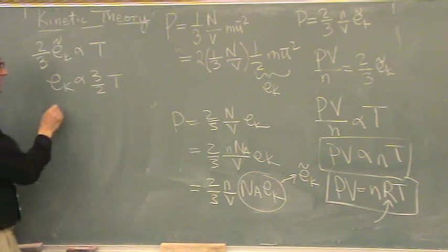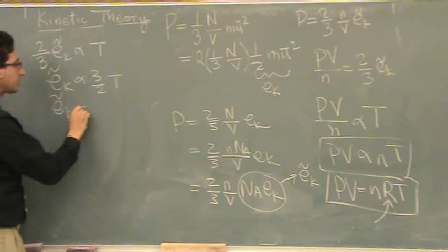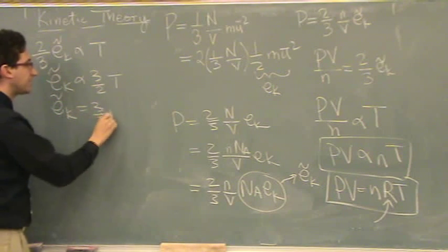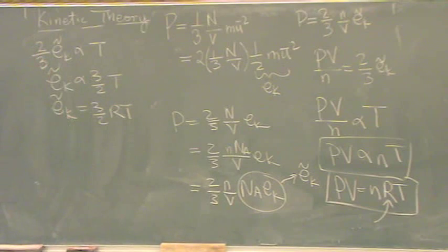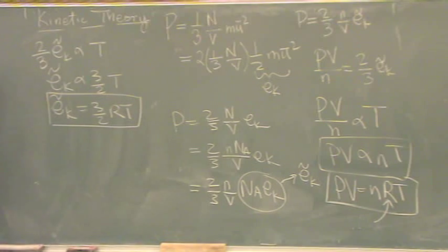That's my derivation. By experiment, EK squiggly is actually three-halves, and it's the same constant that goes in there. So now I have a second formula for kinetic energy.